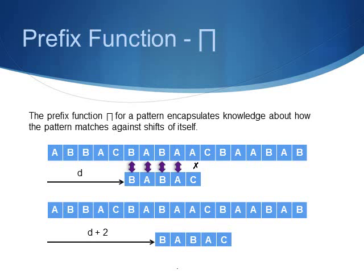The prefix function pi for a pattern encapsulates knowledge about how the pattern matches against shifts of itself. This way we can skip invalid shifts and save computational time. For the example on the screen, after shifting by distance d, we can already see that shifting by d+1 and matching b with a would be invalid, so we shift by d+2 instead.